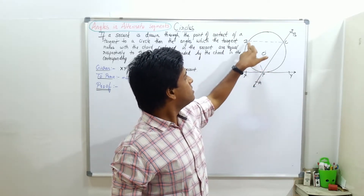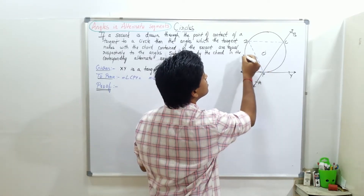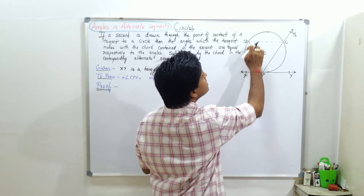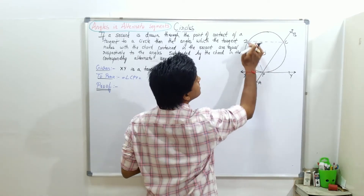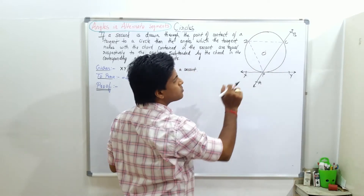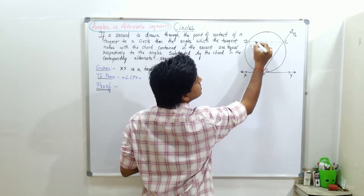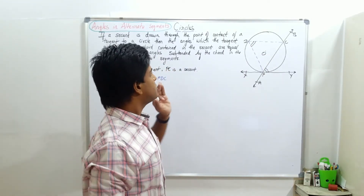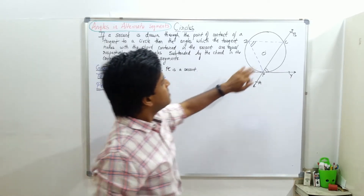And from this point of contact, we have drawn a triangle. We can draw a triangle in any type, so this point D can be at any point in the circle. If we draw a triangle, drawing any point D with C and P, this angle should be equal to this angle. So this we need to prove: angle CPY should be equal to measure angle PDC.